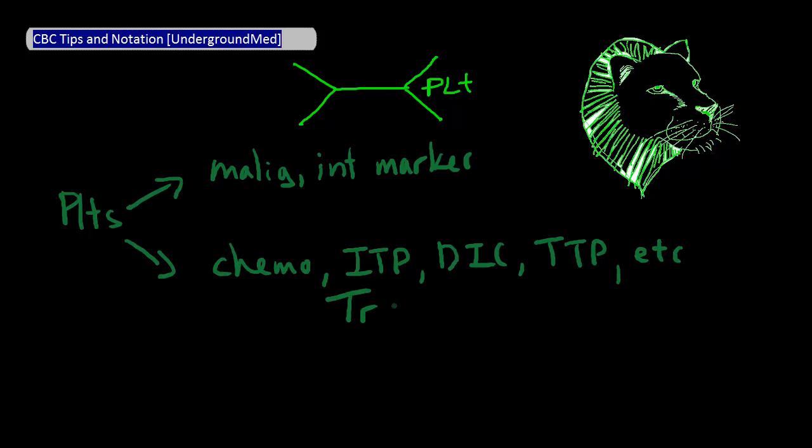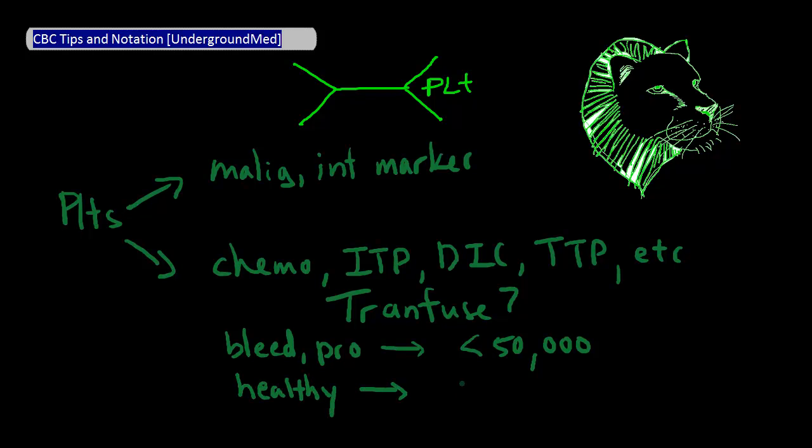Now, at what platelet level do you start considering a platelet transfusion? For patients that are actively bleeding or about to undergo an invasive procedure, you want to infuse platelets if their platelet level is below 50,000. However, for perfectly healthy patients, you actually don't have to transfuse them until they get to a platelet level below 5,000. As a random piece of knowledge, each unit of platelets that you give is expected to raise the platelet count by 30,000 on average.